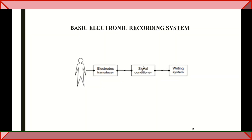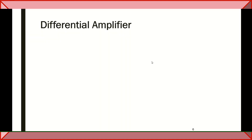We know about the signal conditioning unit. This is the basic electronic recording system. We are measuring potentials from different parts of the body using a sensor, and the measured quantity is converted into an electrical signal using a transducer. After that, the measured electrical quantity is processed using the signal conditioning circuit. After processing, we record the information using a writing system. Here the signal conditioning process is considered as amplification, and the important type of amplifier is the differential amplifier.